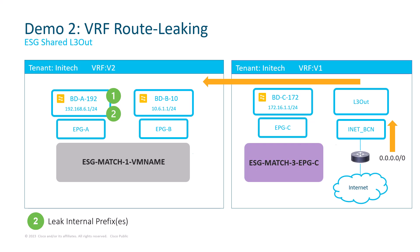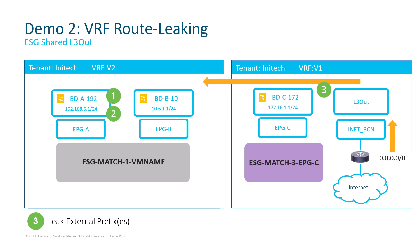Step three: in V1, we received a default route prefix from an external router, which we need to leak to VRF2. We'll do this configuration at the VRF level again, which is very intuitive. I'm going to leak the external prefix 0.0.0.0/0 from V1 to V2. The last step is configuring a contract that allows ESG1 to communicate with the external EPG named INETBCN. From the first video, we know that placing a contract between an ESG and an external EPG is supported. Let's switch to the fabric to configure this scenario.